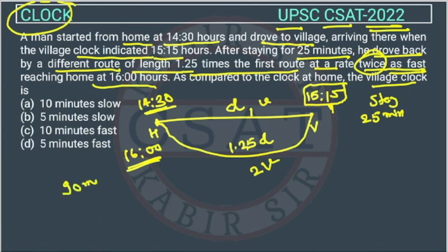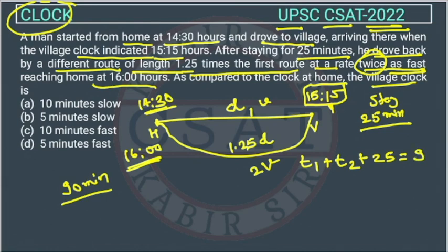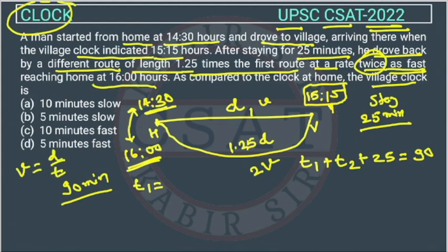We can say the time going is t1 and returning is t2, and 25 minutes were spent staying. So t1 + t2 + 25 = 90 minutes. Using the formula speed = distance/time: t1 = d/v. For the return trip, t2 = 1.25d / 2v.